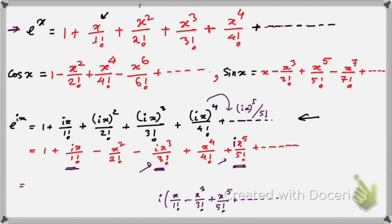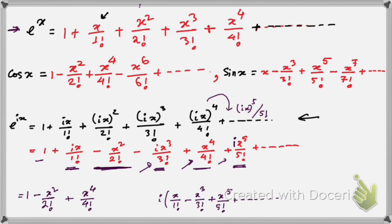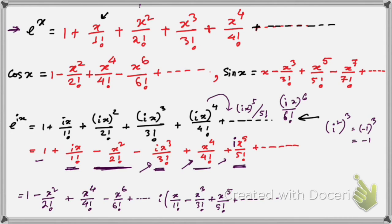The remaining real terms are: 1 minus x squared by factorial 2 plus x to the power 4 by factorial 4. The next term in the real part comes from (ix) to the power 6 by factorial 6, where i to the power 6 is i squared cubed, which equals minus 1 cubed equals minus 1, giving minus x to the power 6 by factorial 6, and so on.